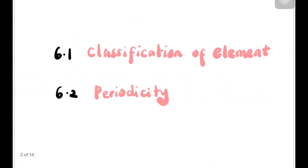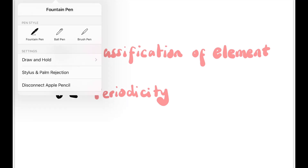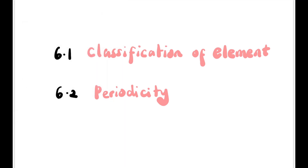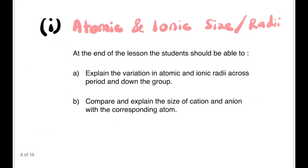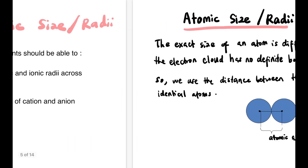Hi guys, welcome back to the channel. Today we're going to learn Chapter 6, Periodic Table, and we're going to focus on 6.2 Periodicity, specifically on atomic and ionic size or radii. At the end of this lesson, you should be able to compare the size of atomic and ionic radius across the period and down the group, and also compare the cation and anion.